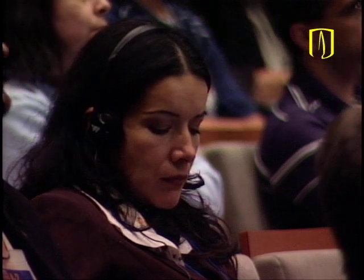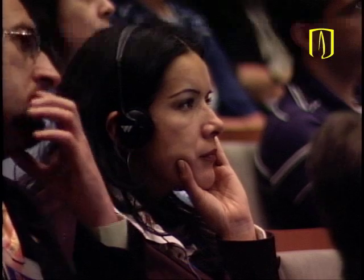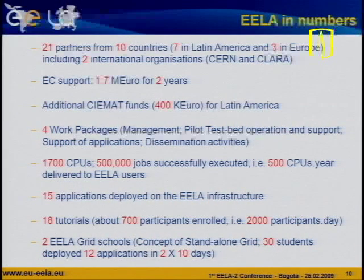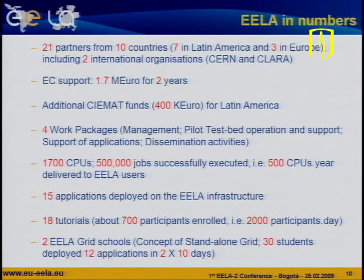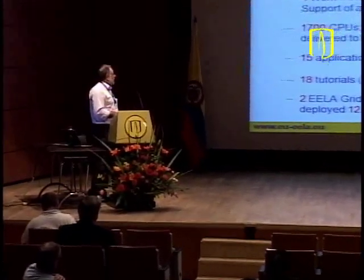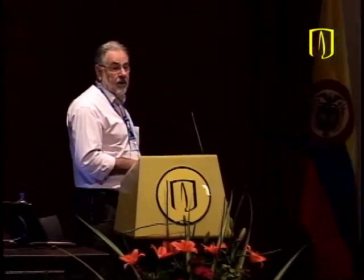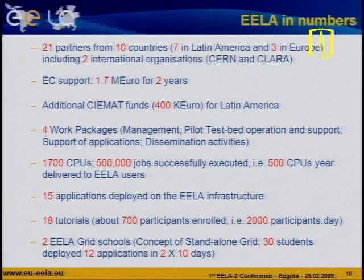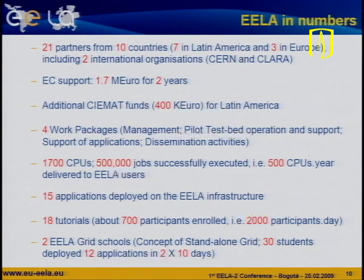Just a few numbers from EELA first phase: 21 partners, 10 countries — 7 in Latin America, 3 in Europe — plus international organizations. Additional CIMAT funds helped us. Distributed organization forward package: 1,700 CPUs, 500,000 jobs successfully executed — meaning 700 CPU-years delivered to EELA users. 50 applications deployed on this infrastructure, 18 tutorials meaning about 2,000 participant-days — a very aggressive training effort. And we managed to first create and then run two EELA grid schools with the concept of a standalone grid, with 30 students deployed and 12 applications in twice 10 days.